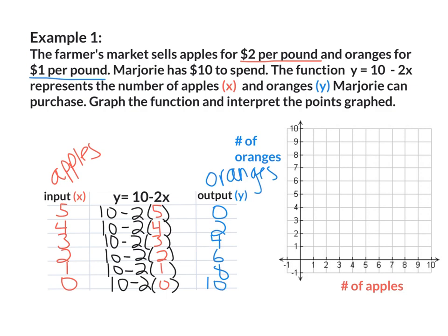Now I'm going to take this data and plot it on my graph. Our input is our x value and our output is our y value. The x-axis is labeled as the number of apples and the y-axis as the number of oranges. If she has 5 apples, she has 0 oranges. 4 apples — 2 oranges. 3 apples — 4 oranges. 2 apples — 6 oranges. 1 apple — 8 oranges. 0 apples — 10 oranges. Now we connect the dots to make our line, and that is our linear function.